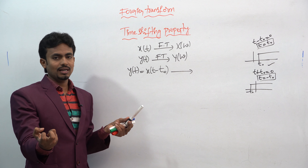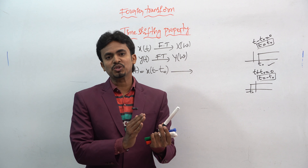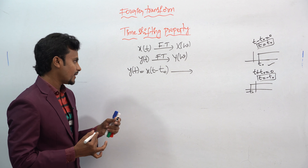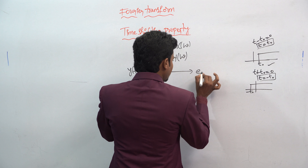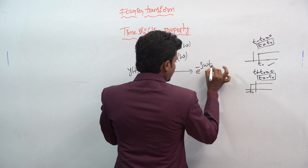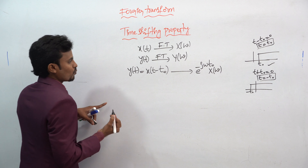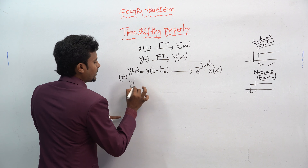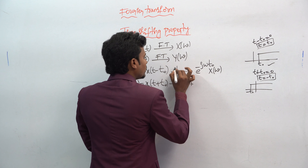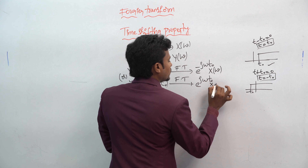We will check what happens to the advancing and delaying of the signal in the Fourier transform. The result is: for a delayed signal y(t) = x(t - t₀), the Fourier transform becomes e^(-jωt₀)·X(ω), and for an advanced signal y(t) = x(t + t₀), it becomes e^(+jωt₀)·X(ω).